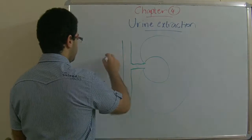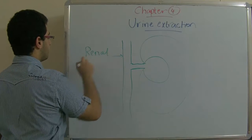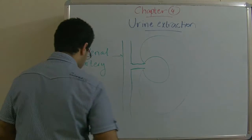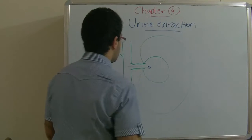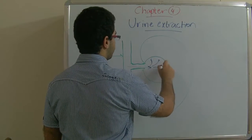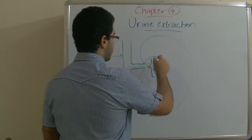This renal artery enters the kidney at its concave surface and then it branches into smaller arterioles. And as we have said,